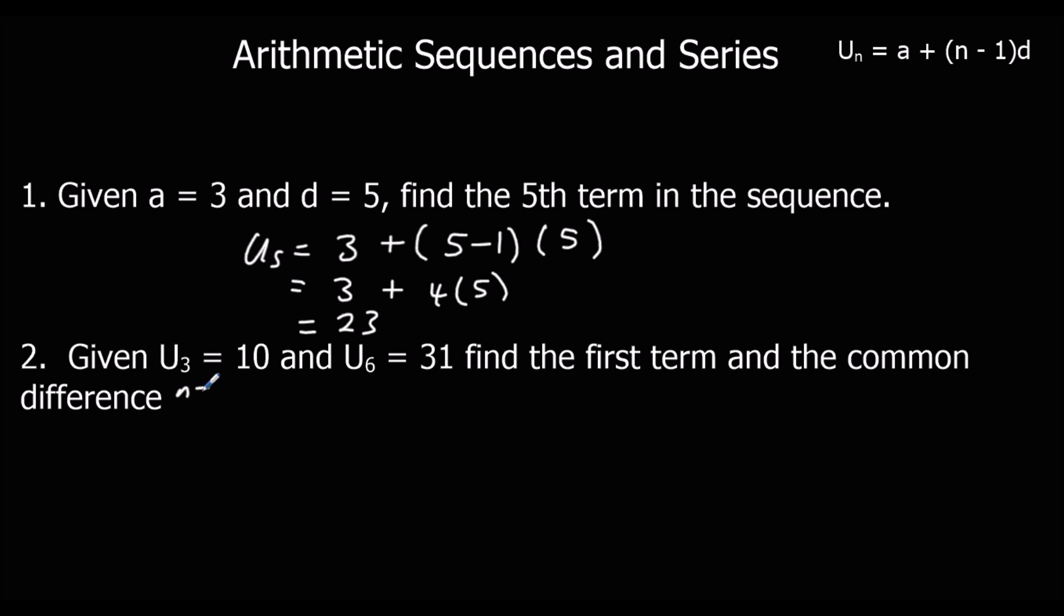u3 is 10. We've got n is 3. 10, u3 equals 10. So I'm going to change this to 10. Equals a, plus 3 minus 1, 3 minus 1, times d. Secondly, 31 equals a, plus 6 minus 1, because n is 6 for this one. 6 minus 1, times d. 31 is a, plus 5d. We've got simultaneous equations. What we can do, is we can write this first one here, underneath the second one, and take away. We've got 21. The a's cancel, equals 3d.